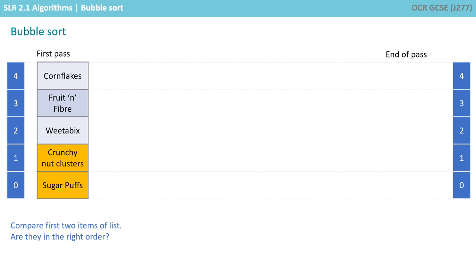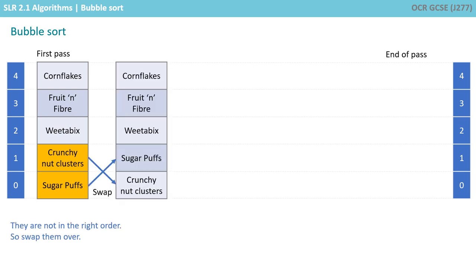We start by comparing the first two items of the list. Are they in the right order? Well, they're not in the right order, so we swap them over.